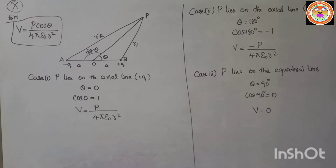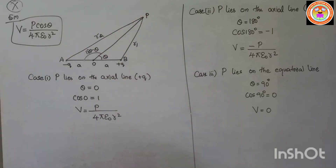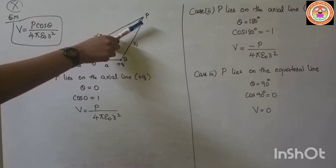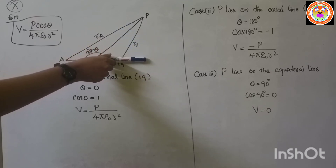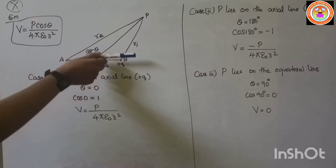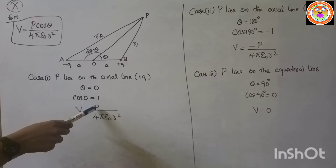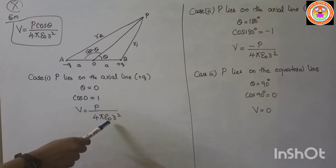Now for the special cases. Case 1: Point P on the axial line of the electric dipole on the side of the positive charge. Here theta = 0°, so cos 0° = 1. Therefore V = p / (4πε₀ r²).